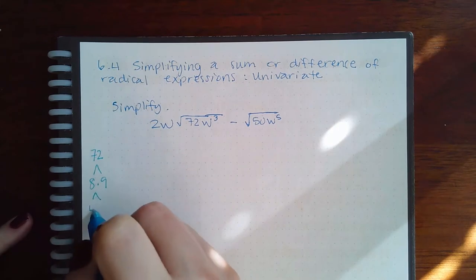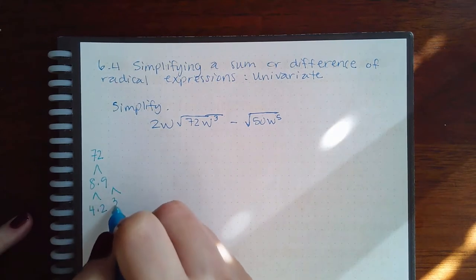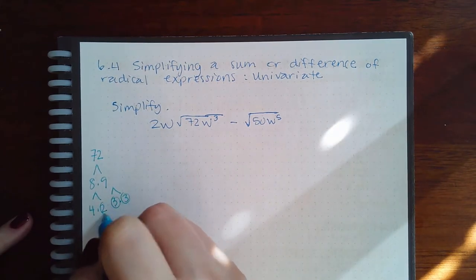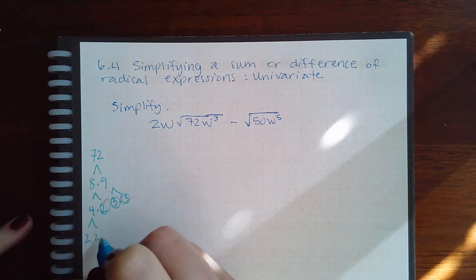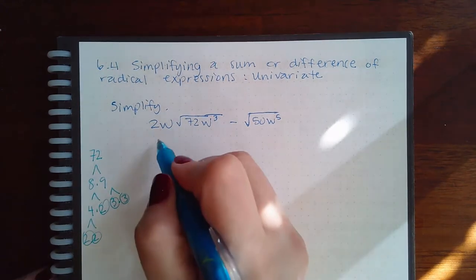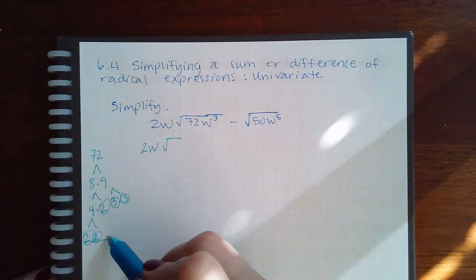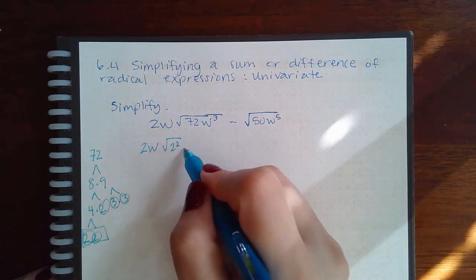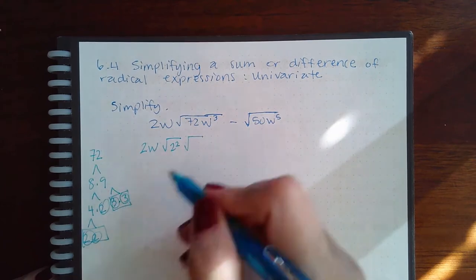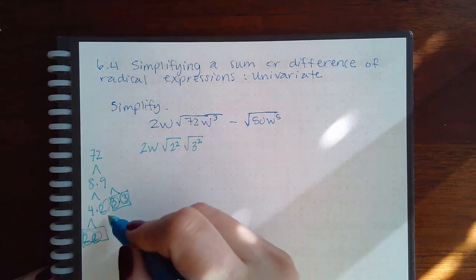This is 4 times 2, that's 3 times 3. These are all prime, but this one is 2 times 2, and now they're prime. So I'm going to keep my 2w there, and then I'm going to do the square root of one pair, 2 squared, the square root of another pair, 3 squared.